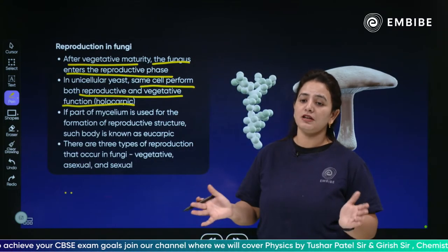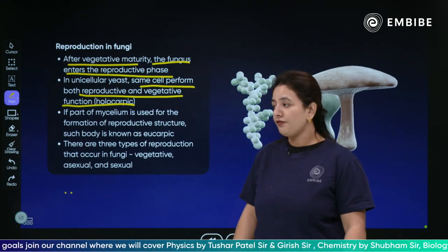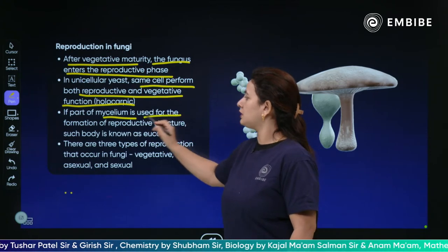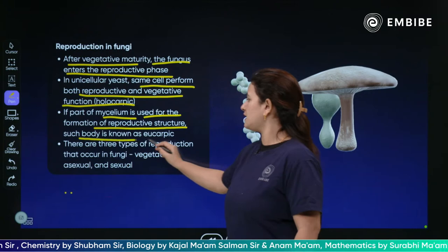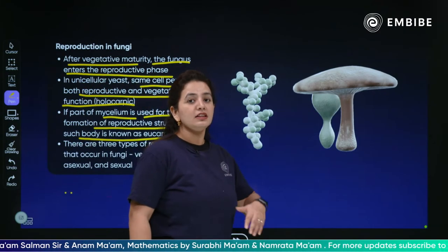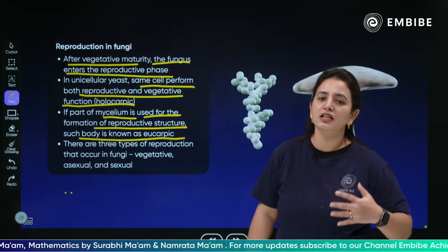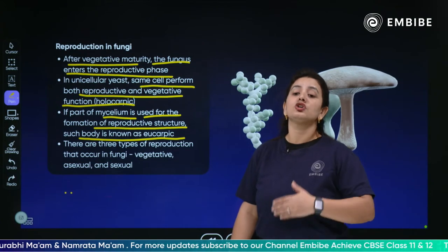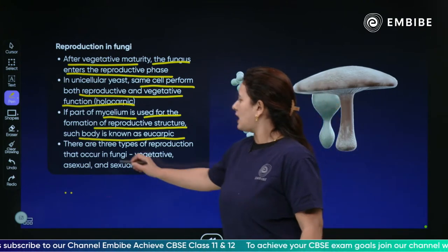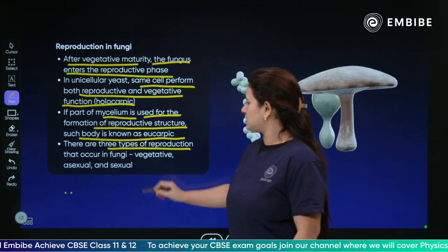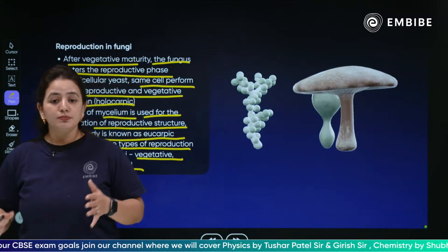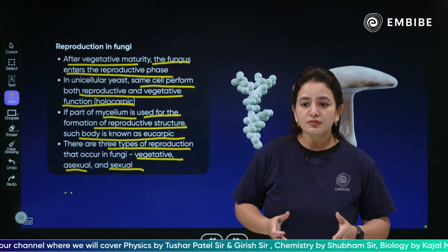A single cell performing all the functions, especially related to reproduction, is called holocarpic. If a part of mycelium - a network of hyphae - is used for the formation of reproductive structures, such a body is known as eucarpic. If there is a multicellular fungi with a mycelium that is a network of filamentous hyphae, they reproduce and produce specialized structures which help in reproduction, and that fungi body is called eucarpic. There are three types of reproduction taking place in fungi: vegetative reproduction, asexual reproduction and sexual reproduction.